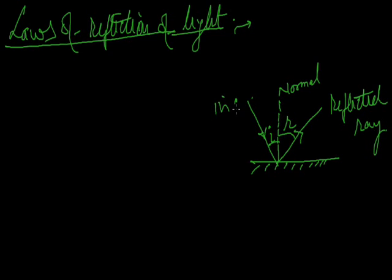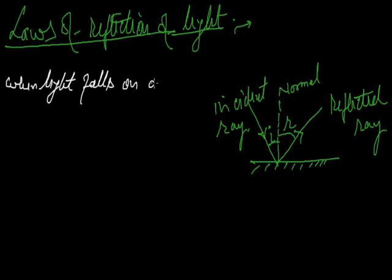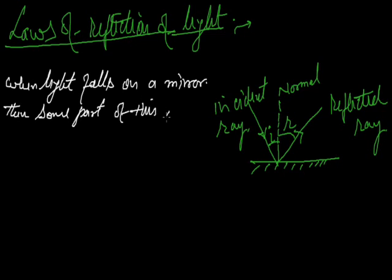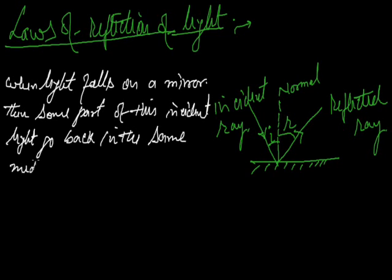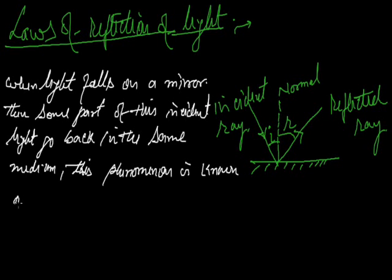When light falls on a mirror, then some part of this incident light goes back in the same medium. This is known as the reflection of light.